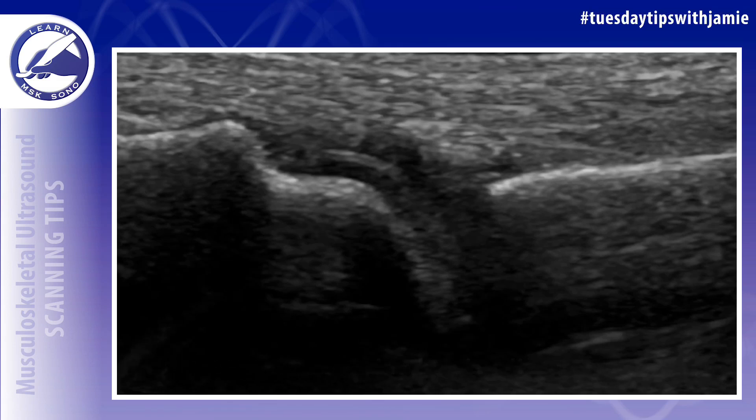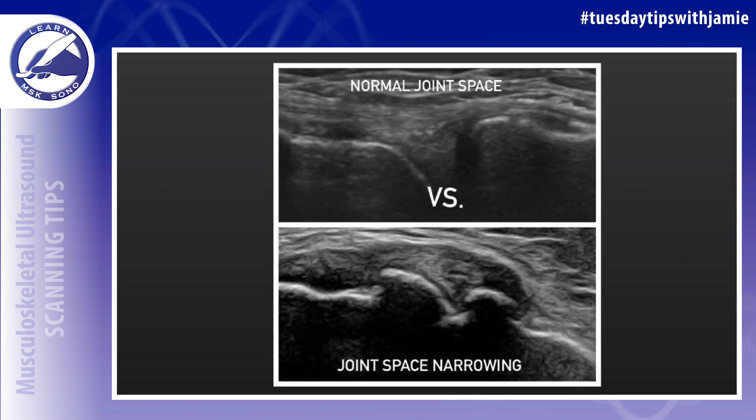Can joint space narrowing be visualized on ultrasound? The answer is yes. Here's an example of a normal joint space versus one with joint space narrowing. There normally is a space present between the ends of the bones where they articulate to form a joint. These ends are covered by articular cartilage.